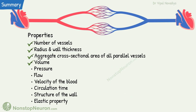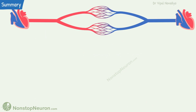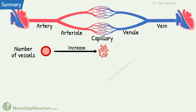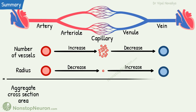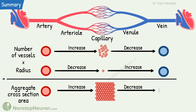This completes all the physical parameters of the vessels. The remaining ones are more like physiological properties and we will study them in different videos. Now let's have a quick summary. Blood vasculature includes arteries, arterioles, capillaries, venules, and veins. As the arteries branch, the number of vessels increases as we go from the aorta to capillaries, then vessels merge and the numbers decrease as we go towards vena cava. The radii of individual vessels decrease with branching and increase with merging. Aggregate cross-section area is basically the number of all parallel vessels at that level multiplied by unit cross-section area — it increases with branching and decreases with merger.